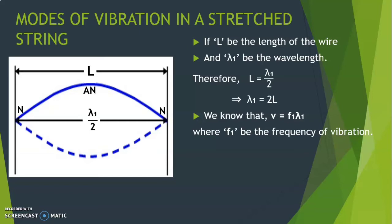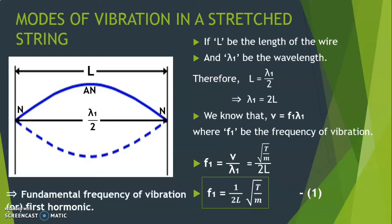Getting the value of f1, we get f1 equals v by lambda 1. Here, substituting the value of v and lambda 1, we get f1 equals root over T by m divided by 2L, which implies f1 equals 1 by 2L times root T by m. This is our first equation. This is known as fundamental frequency of vibration or first harmonic.